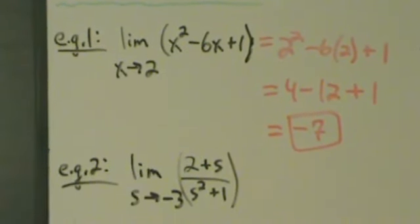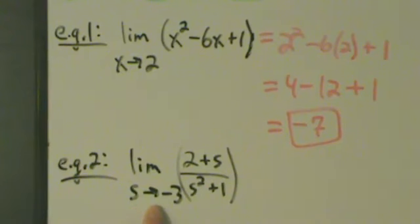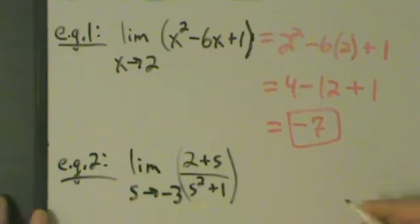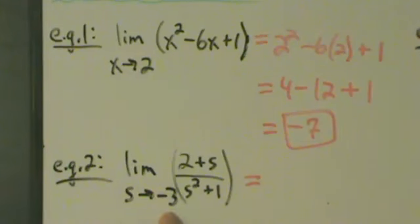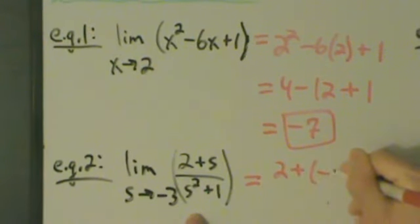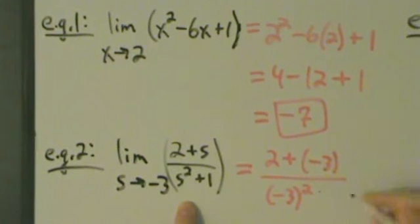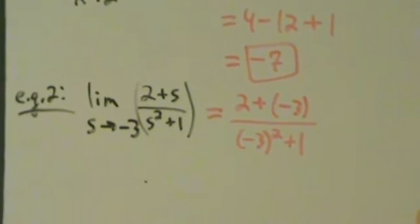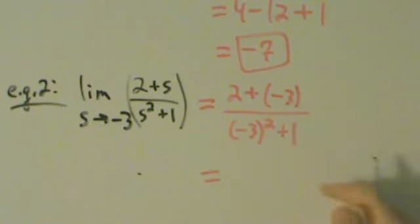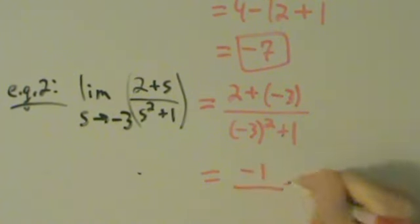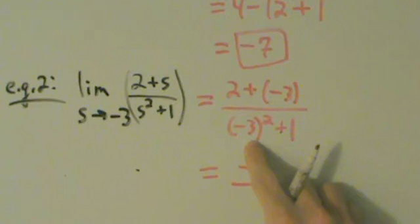Let's look at Example 2. We're going to take the limit as s approaches negative 3 of (2 plus s) divided by (s squared plus 1). The parentheses here aren't really necessary, but they do help make this a little easier to read. So again, direct substitution — we're just going to take negative 3 and directly substitute it into this expression anywhere we see an s. So we're going to have (2 plus negative 3) divided by (negative 3 squared plus 1). 2 plus negative 3 is really 2 minus 3, which is negative 1. On the bottom, negative 3 squared is 9, plus 1 is 10.